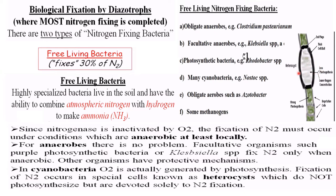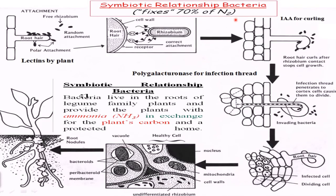Seventy percent of atmospheric nitrogen is fixed by symbiotic bacteria. What happens is that bacteria live in the roots of legume family plants and provide the plant with ammonium in exchange for the plant's carbon and a protected home. If we take this as a root hair of a legume plant, this root hair will consist of a lectin, which is a carbohydrate-binding protein that acts as a receptor in the plant root cells. These receptors are detected by free-living Rhizobium present in the soil, and they attach to this receptor with the help of their protein called polygalacturonidase.